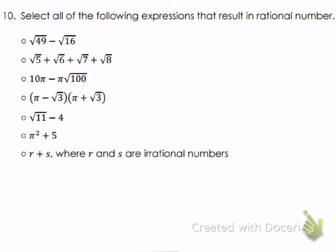Last question: select all expressions that result in a rational number. First: √49 minus √16. √49 = 7, √16 = 4, and 7 minus 4 = 3, which is rational — yes. Second: √5 plus √6 plus √7 plus √8 — none are perfect squares, all are irrational, so their sum is irrational — not rational.